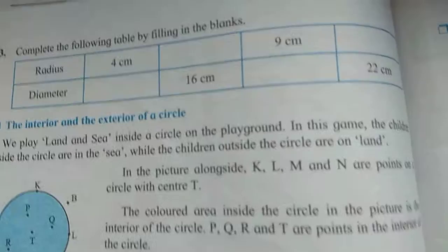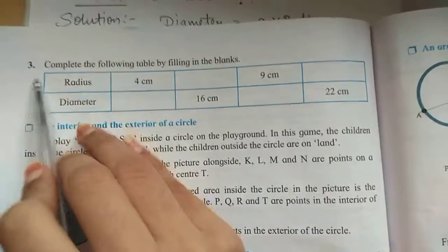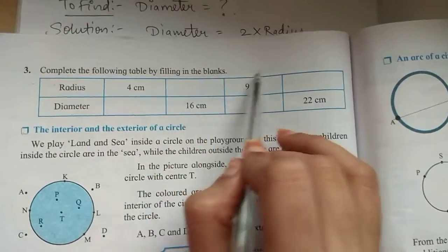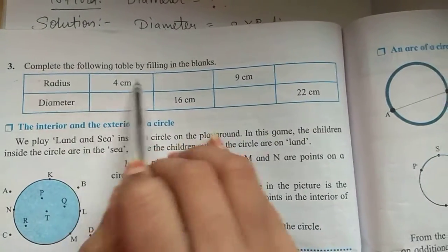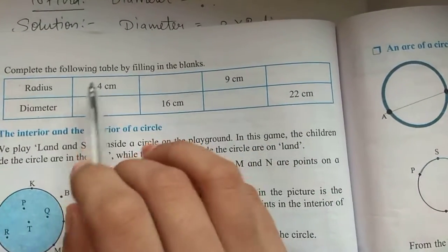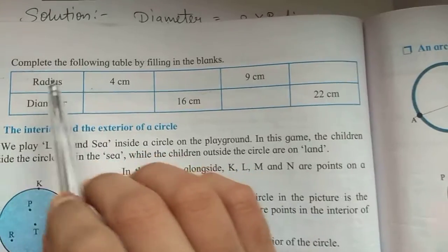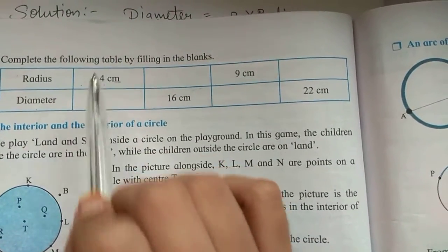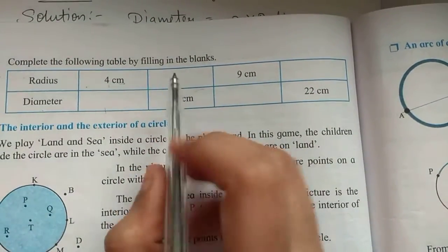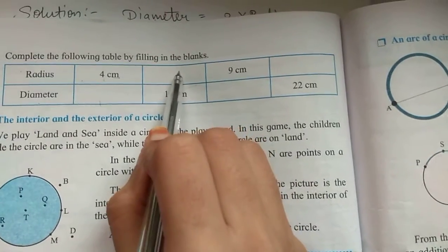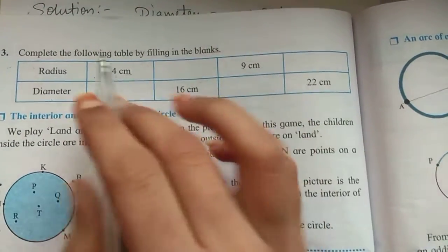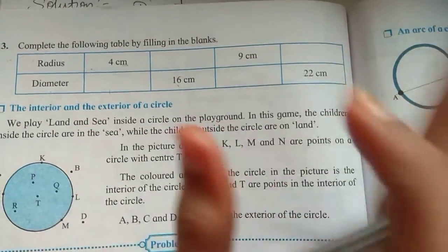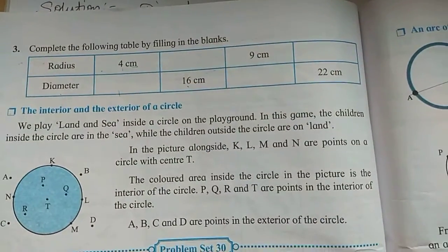Third sum, question number 3: complete the following table by filling in the blanks. In this table, in some parts radius is given and we have to find diameter, and in some columns diameter is given and we have to find radius. So we will be solving in same manner.